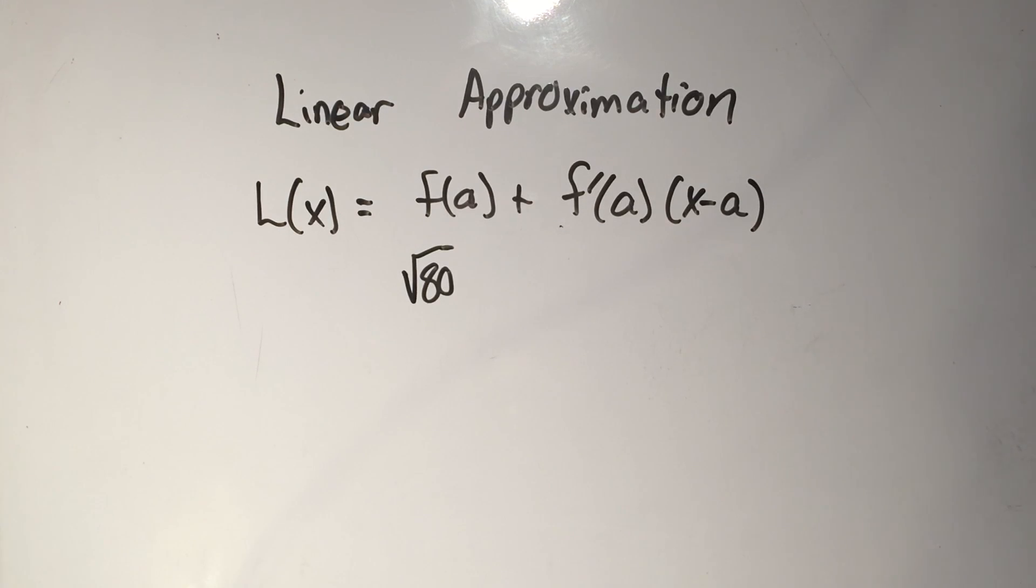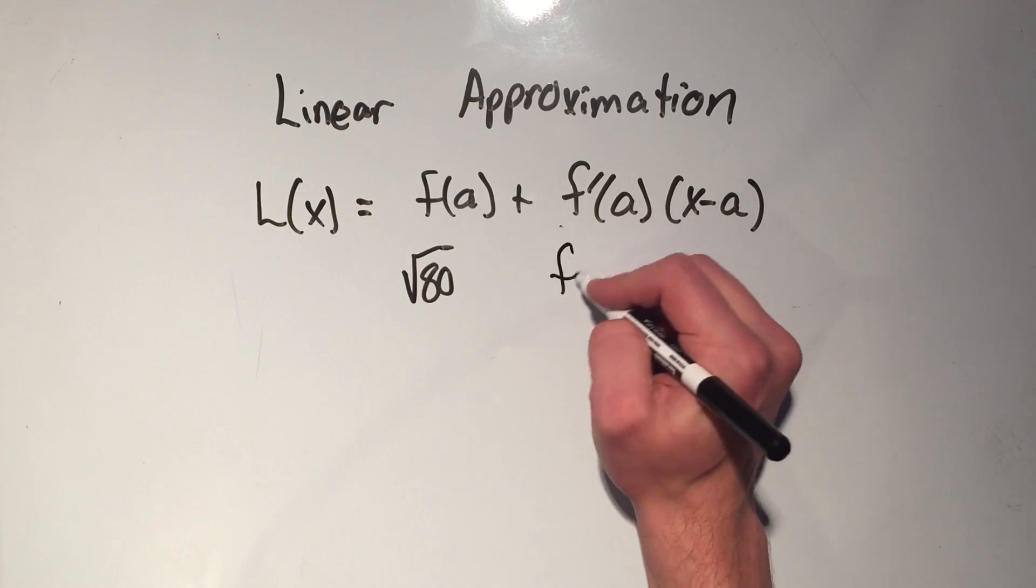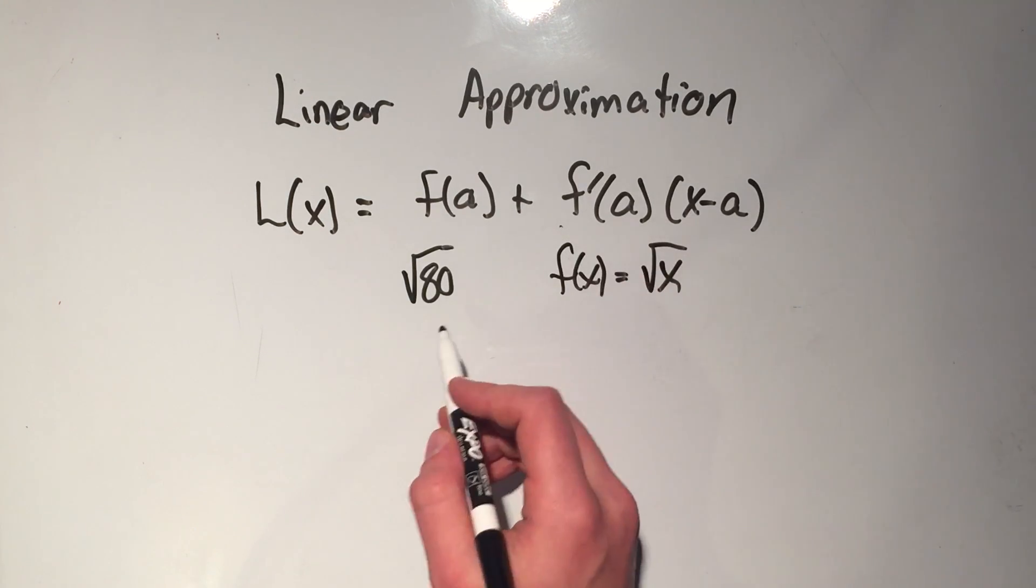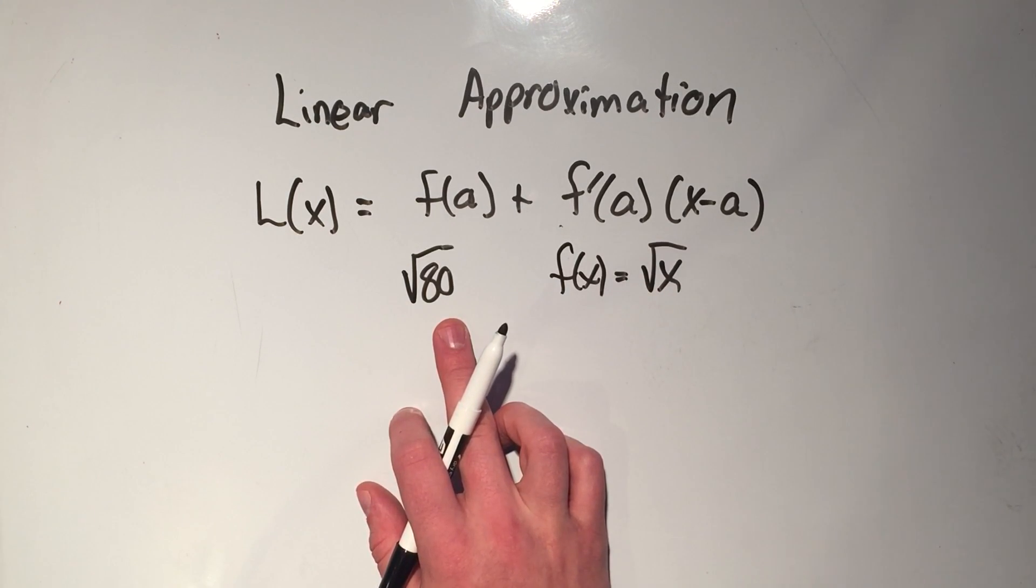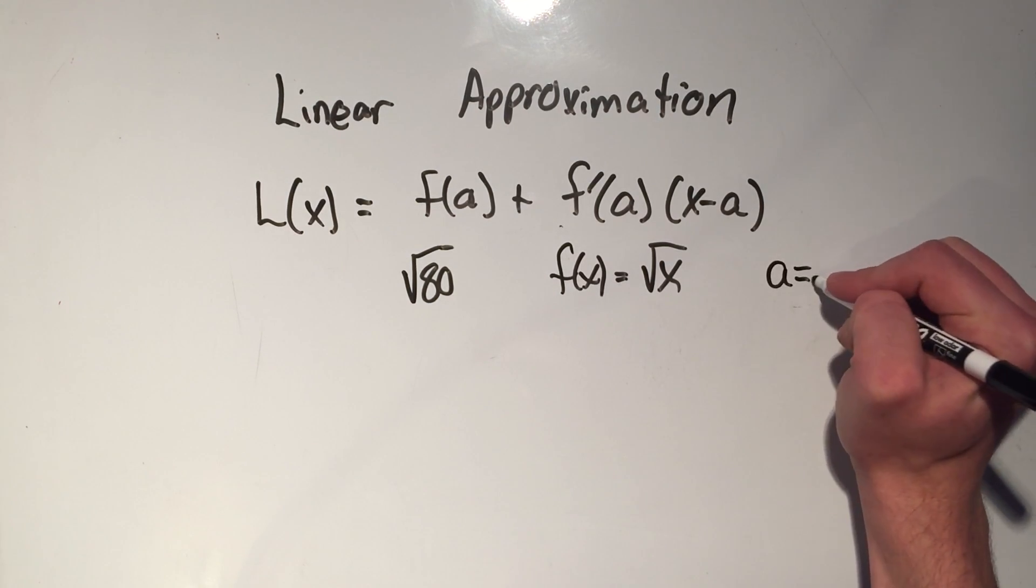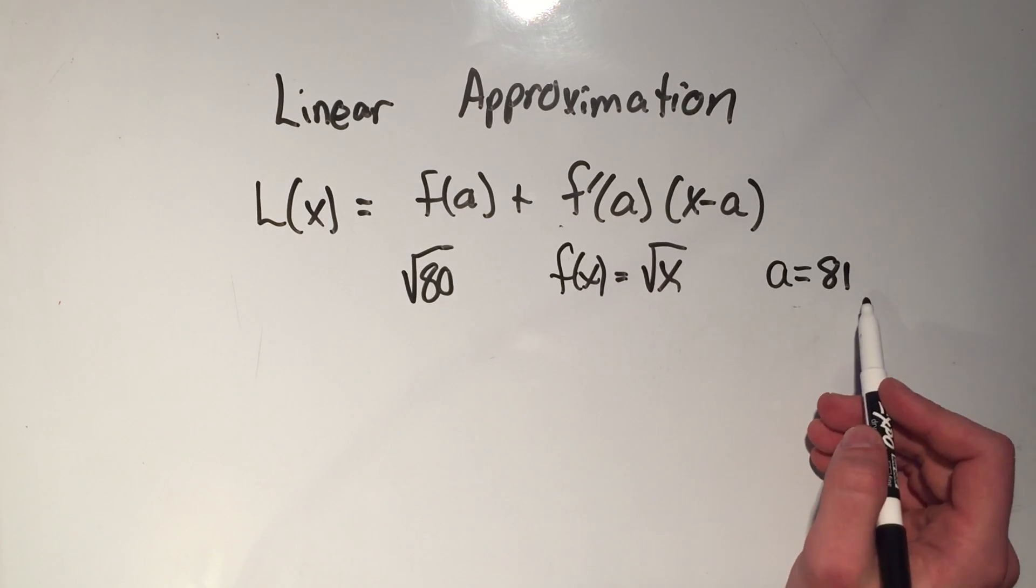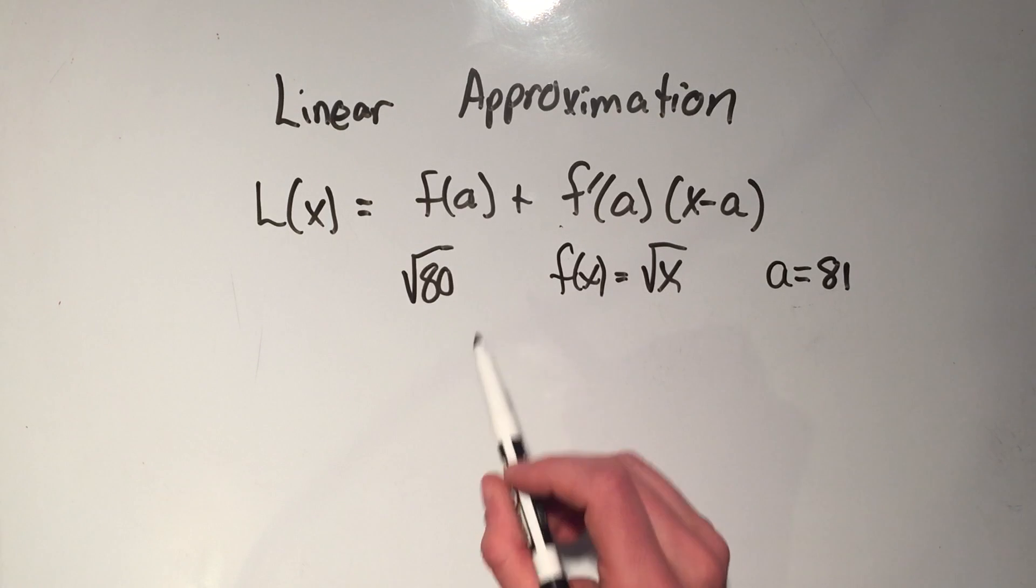So if you had a function and an a, you could write the linear approximation for anything. So what is the function I'm concerned with in the square root of 80? Well, it's the square root function. And a is a point close to 80 that's easy to work with in the function. So what's something near 80 that's easy to take the square root of? How about 81? Square root of 81 is 9, so that's really easy. So a is something near this number in question.